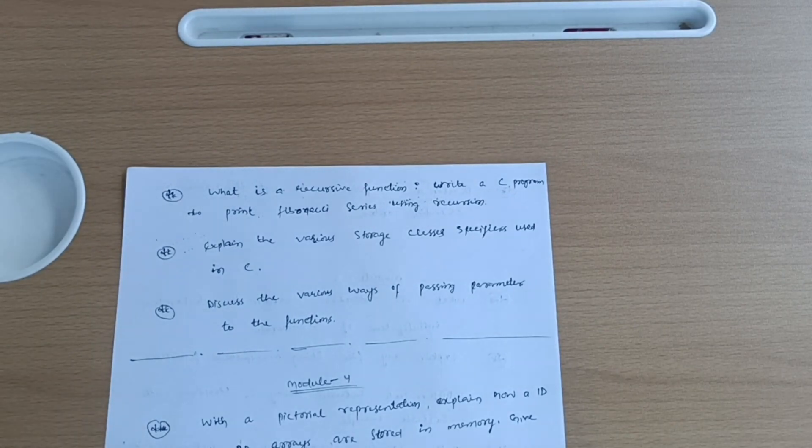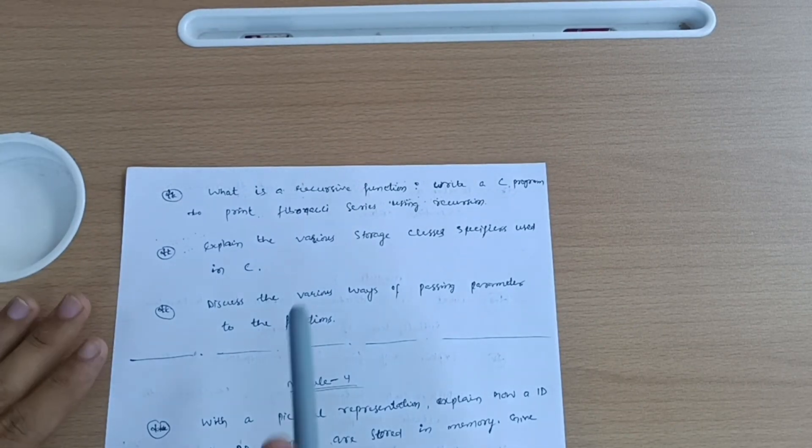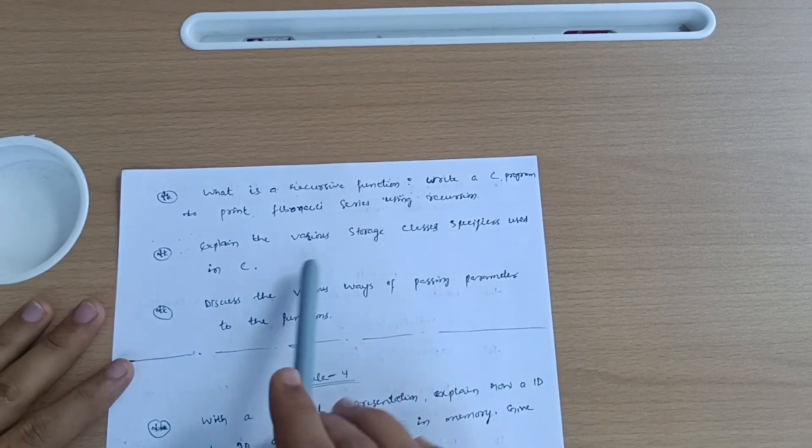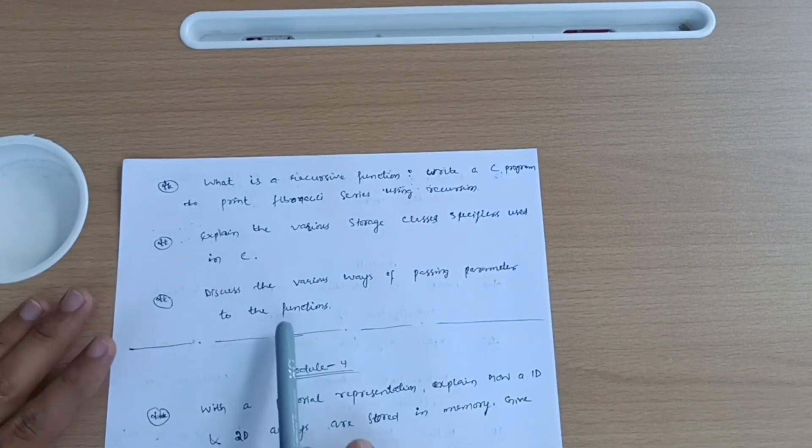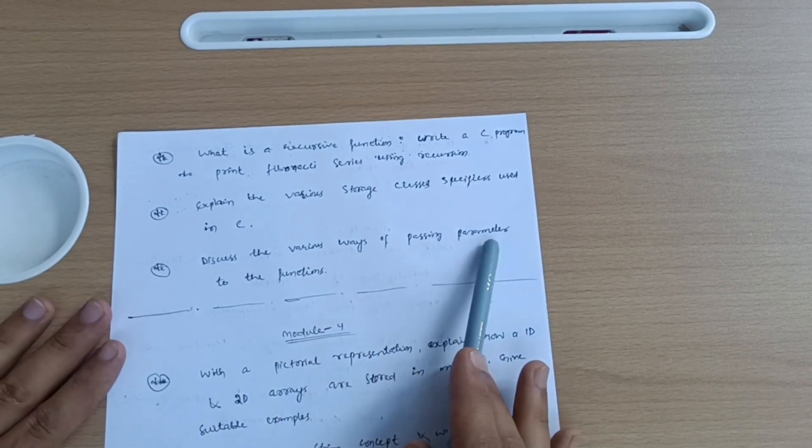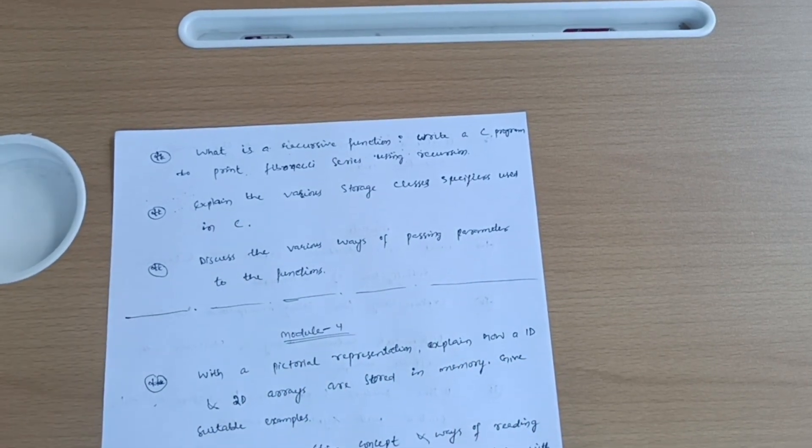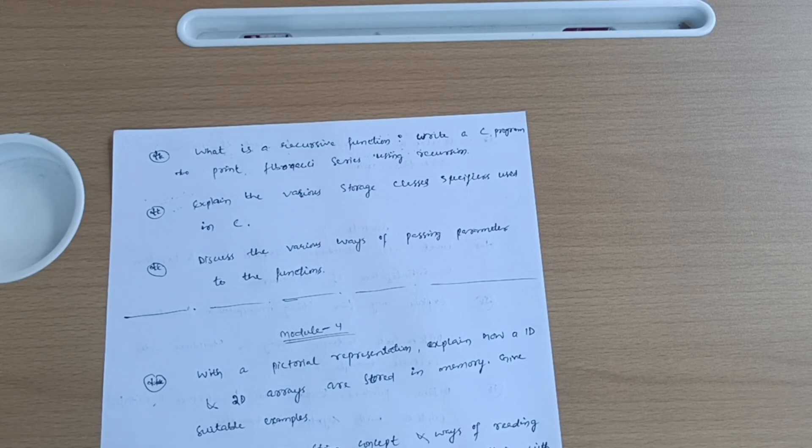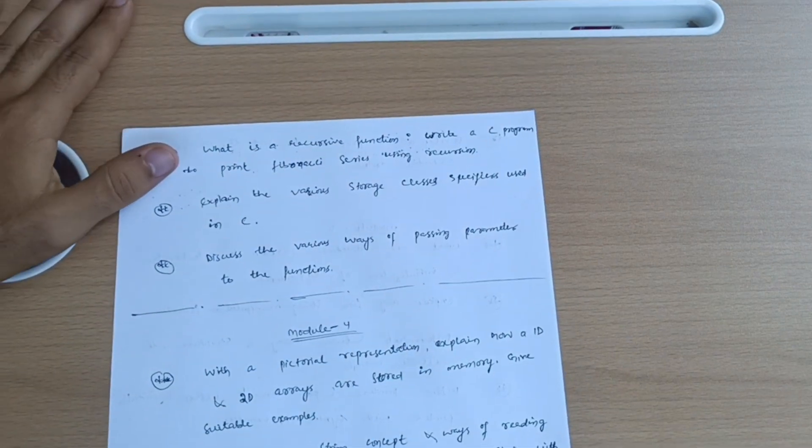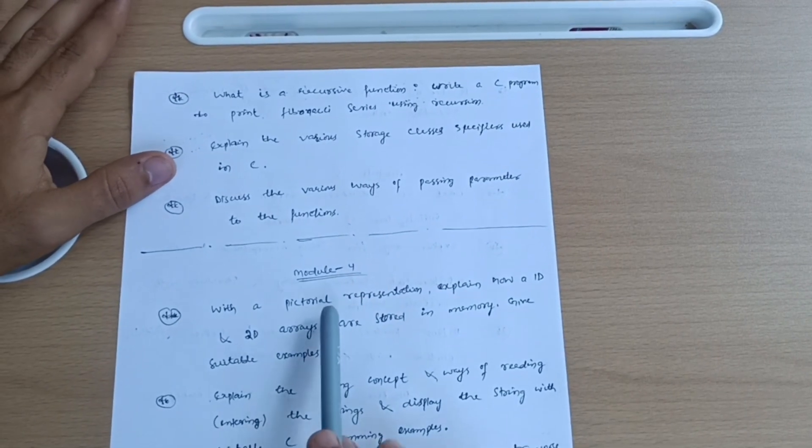Next, what is a recursive function or sometimes they may ask you what is recursion. Write a C program to print Fibonacci series using recursion. Explain the various storage classes specifiers used in C and discuss the various ways of passing parameter to the functions. So this much is enough to cover module third. If you are connected with some different programs also, you can go through.